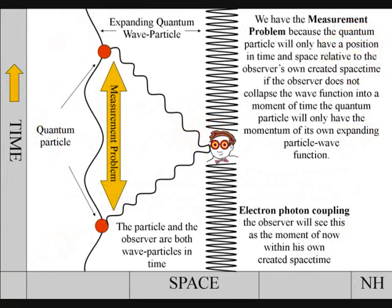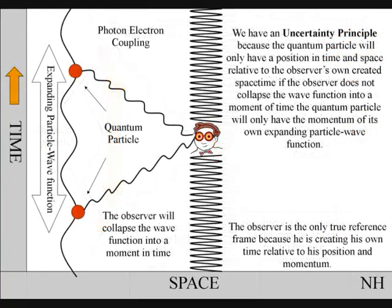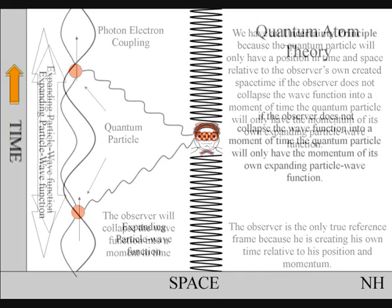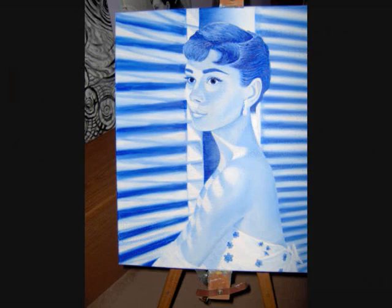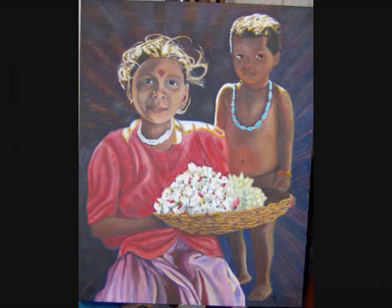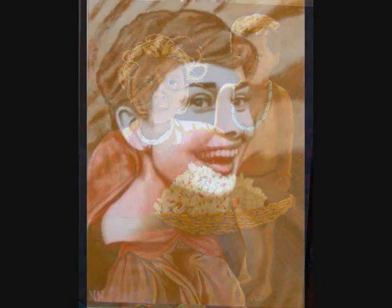We have an uncertainty principle, because the quantum particle will only have a position in time and space if the wave-particle function collapses. If the observer does not collapse a wave-particle function into a moment of time, the quantum particle will only have the momentum of its own wave-particle function. At a fundamental quantum level, the observer is the observed, within his or her own created spacetime.